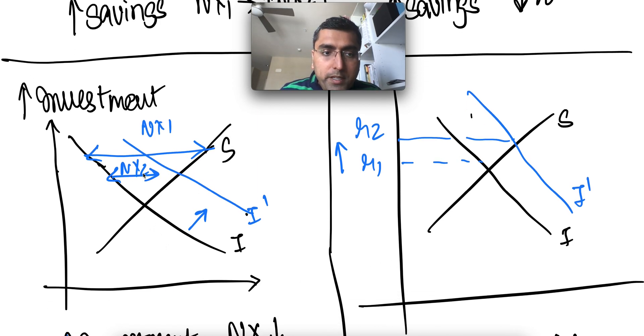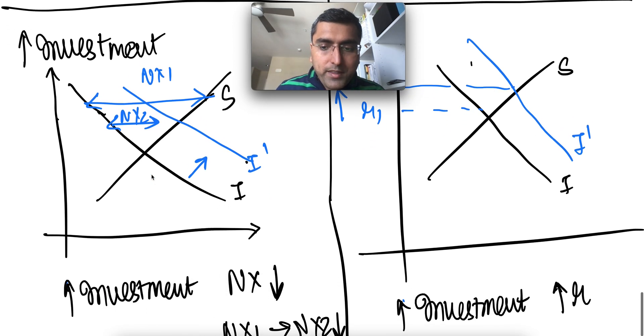Similarly, as investments go up in small open economies, their net exporting decreases from NX1 to NX2, because they are using that money and keeping it with them.